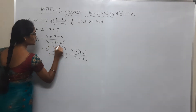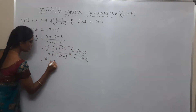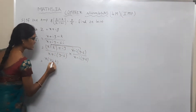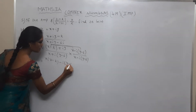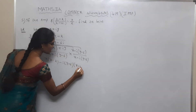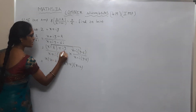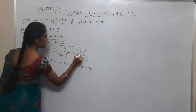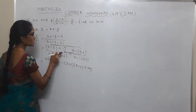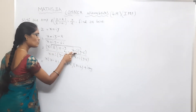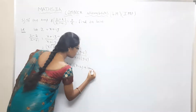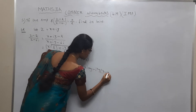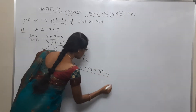After multiplication, the numerator becomes: x(x minus 2) and the cross terms involve i(y minus 6). Expanding further: x(x minus 2) plus i times cross product terms, noting that i squared equals minus 1. The denominator is in the form of (A plus B)(A minus B).